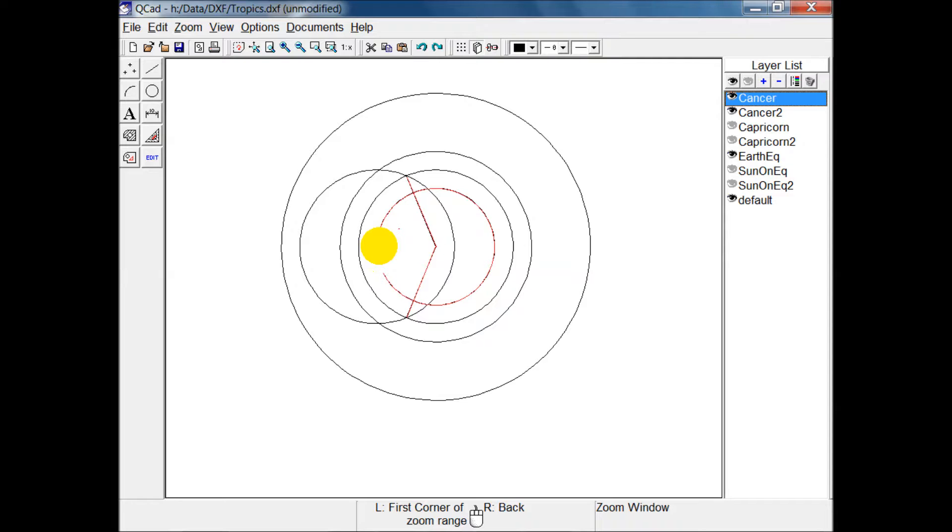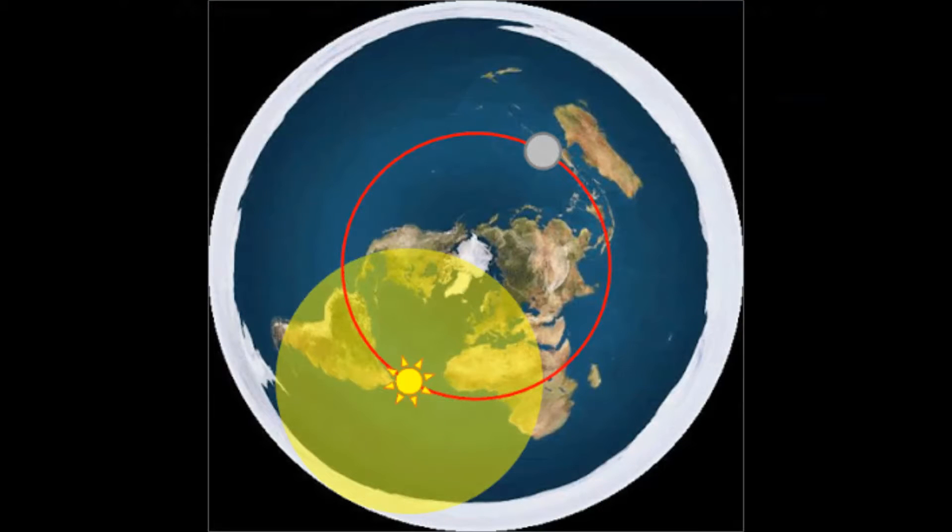Now, the problem with this is that not one of these numbers is even close. The equator doesn't get varying amounts of sunlight throughout the year. It gets exactly 12 hours of sunlight every day, 365 days a year. So that's problem number three.